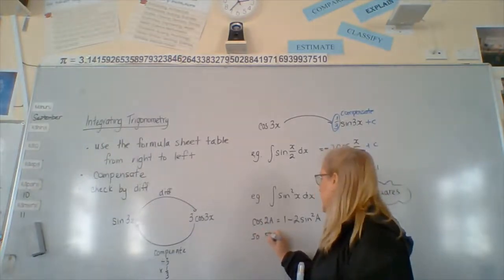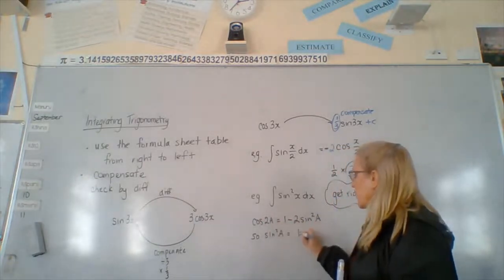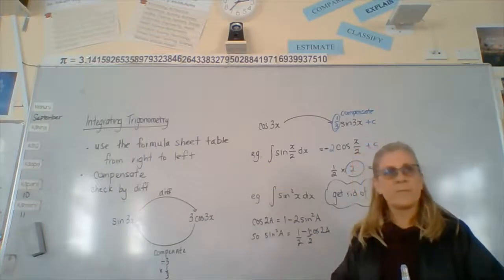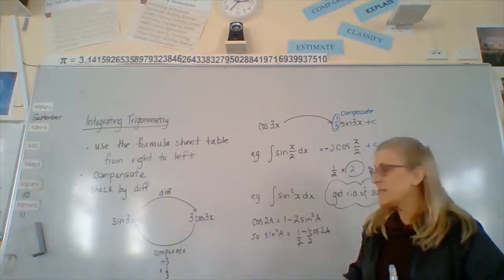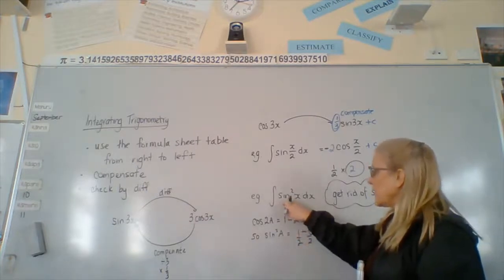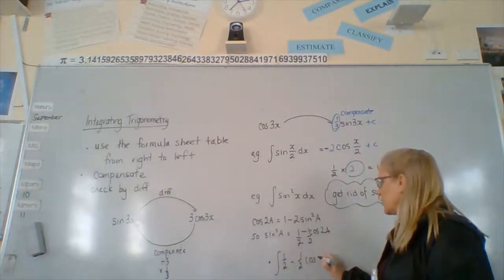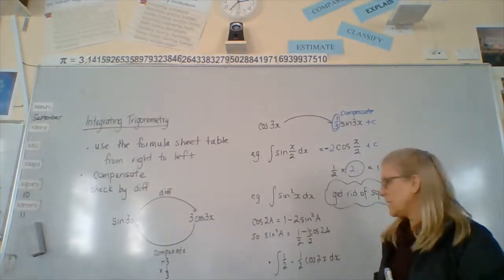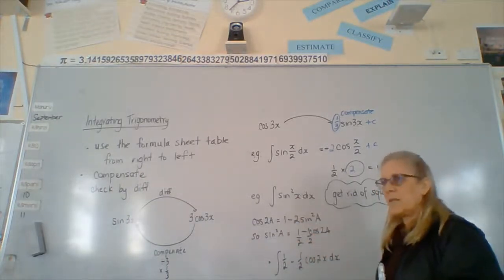So, we're going to change this to say sine squared a equals. So, if we swap it, it's going to be 1 minus cos 2a divided by 2. That's the rewrite of that formula to say sine squared a. So, this is what we're integrating. So, from here, we're going to go to integrate a half minus a half cos 2x dx. Well, that's in the formula sheet. It's written as a, but we were asked in terms of x. I've just replaced it with an x.